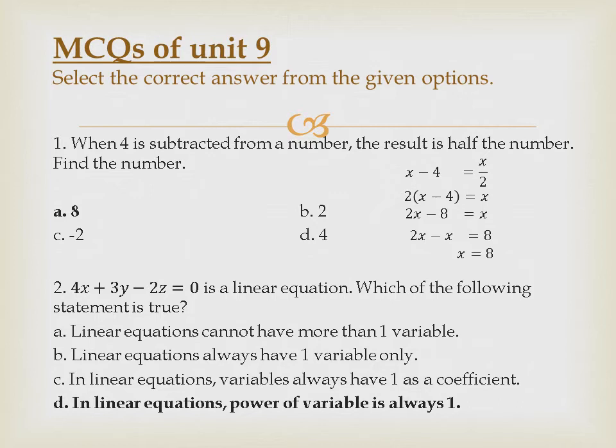Linear equation always have one variable only? Always, that is the first option. Linear equation always have one as a coefficient? Here is the coefficient of x is 4, y is 3, z is 2. It's a wrong statement. The true one is: in linear equation, power of variables is always 1.